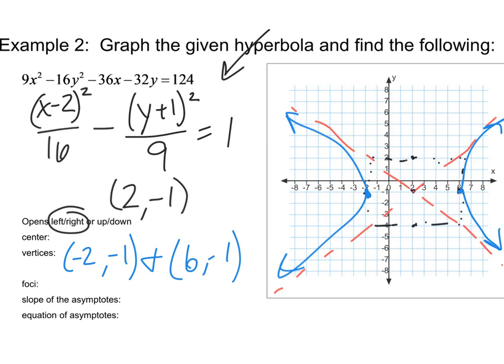So then the foci, c squared equals a squared plus b squared. And we may notice the 16 and 9 is equal to 25, so the c value is 5. So we just have to move 5 units from the center. We had moved 4 units before, so it's just one more beyond that. So the foci would be at negative 3, negative 1 and then positive 7, negative 1.